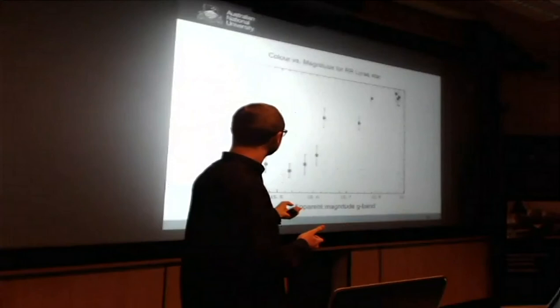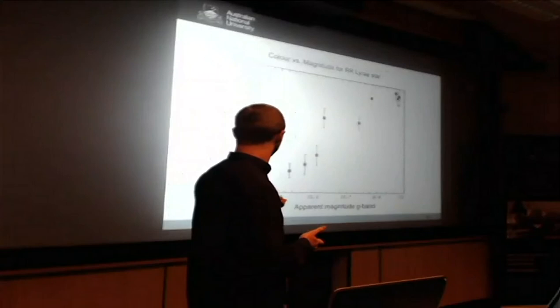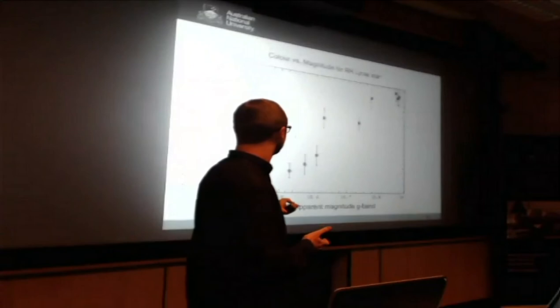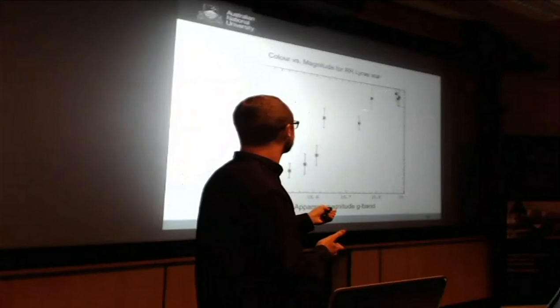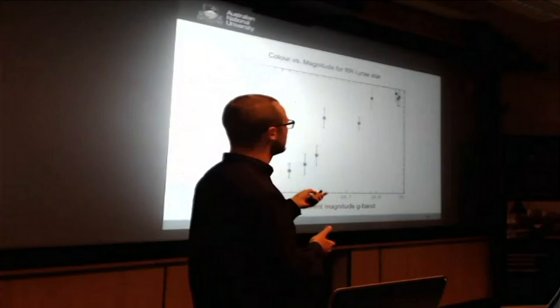I also plotted the color change. I just minused off the green band from the red band, and that gives you the color change, and it's what you'd expect. As the object gets dimmer, it gets redder, and vice versa, it goes back and forth like that.